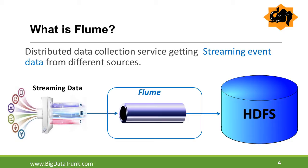The general meaning of Flume is a channel that directs water from a source to some other location where water is required. In a similar way, by using Flume, we can collect data from streaming application servers and transfer this streaming data to HDFS for data analytics.